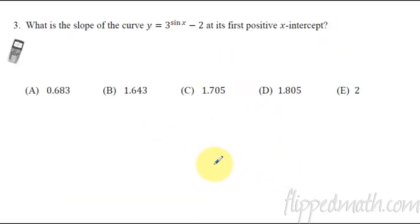For number three, this takes some calculator work. I try to give you that hint here that you're going to want to use a calculator. What is the slope of the curve at its first positive x-intercept? The only way we're going to be able to do that is to plug this into a calculator to figure out when is that very first x-intercept, positive x-intercept. So let's pull that up on the calculator.